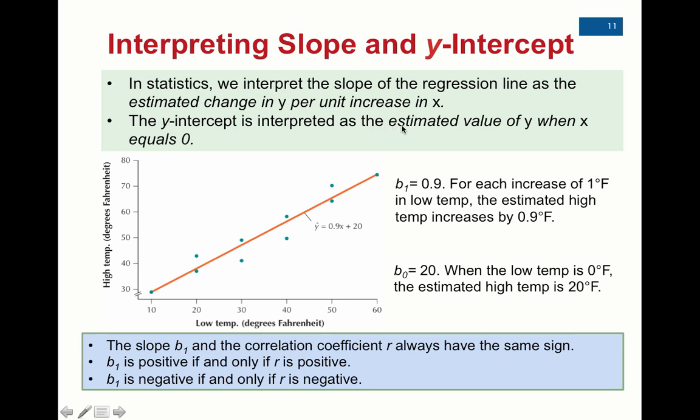The y intercept is interpreted as the estimated value of y when x equals 0. So what this 20 right here is saying is we would predict a high temperature of 20 when the low temperature was equal to 0. In that case, this makes sense. Not every y intercept makes sense. In certain things, when we compare the relationship between two variables, it doesn't even make sense that the x variable would equal 0. But in this case, x equaling 0 means a low temp of 0 degrees, and when there is a low temp of 0 degrees, that corresponds to a predicted high temp of 20. Now, remember, this is a prediction line. It's not an actual data value where we've looked up a low temp somewhere in the United States.